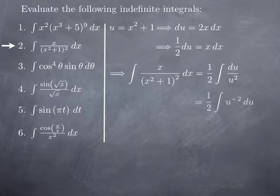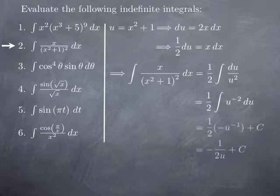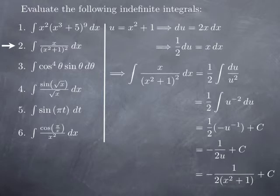Now 1 over u squared is really just u to the negative 2 that I integrate with respect to u, so I use the power rule. I get u to the negative 2 plus 1 over negative 2 plus 1. Negative 2 plus 1 is negative 1, so u to the negative 1 over negative 1 is simply negative u to the negative 1, which I can also write as negative 1 over u. When I multiply that by 1 half I get negative 1 over 2u, plus a constant. Substituting back x squared plus 1 for u, we finally obtain negative 1 over 2 times x squared plus 1, plus a constant.